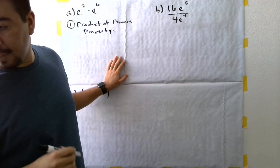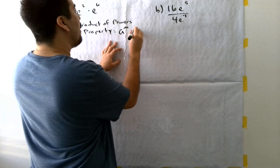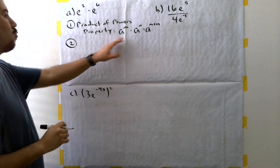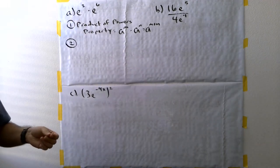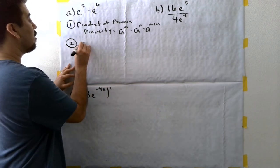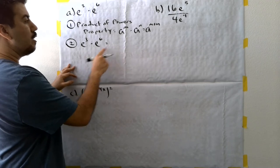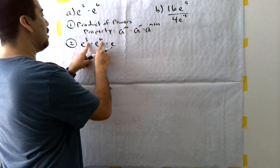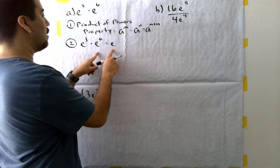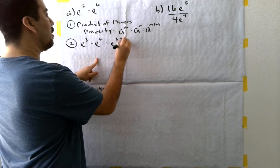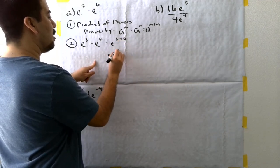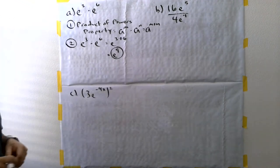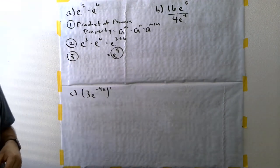The product of powers property states that A to the M times A to the N equals A to the M plus N. Applying this rule: e cubed times e to the sixth equals e to the three plus six. Since the bases are the same, I only write the base once and add the exponents. Three plus six is nine, so this expression simplifies to e to the ninth power.